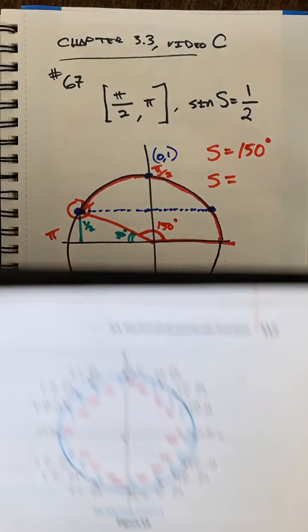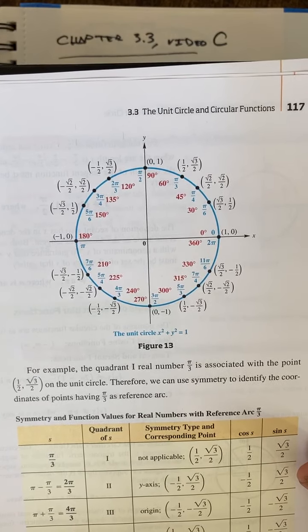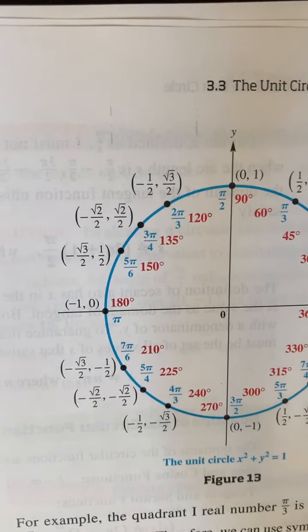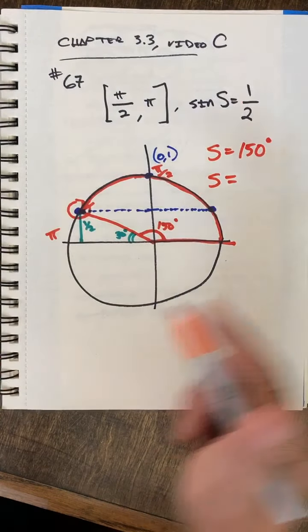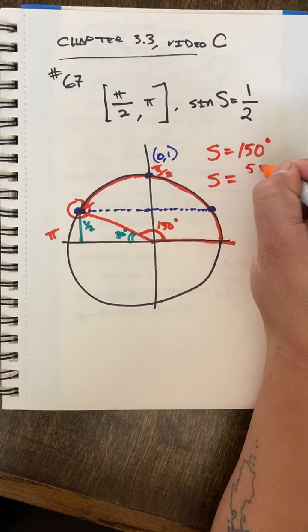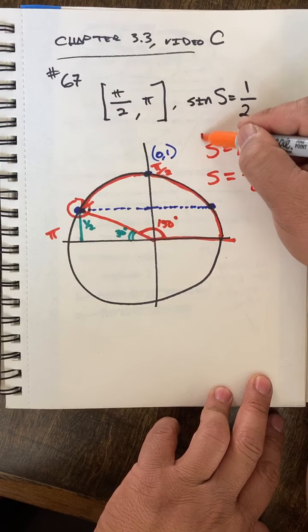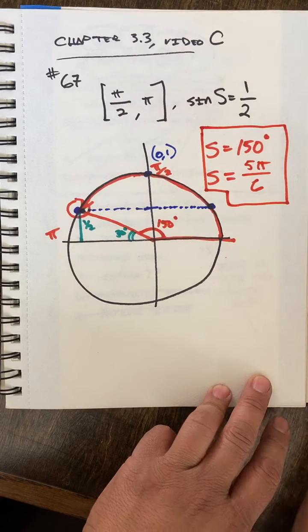the one that looks like this. And it says there it is, 5 pi over 6, right there. Either of these answers are acceptable. They're both correct.